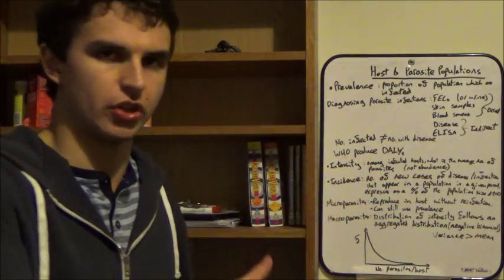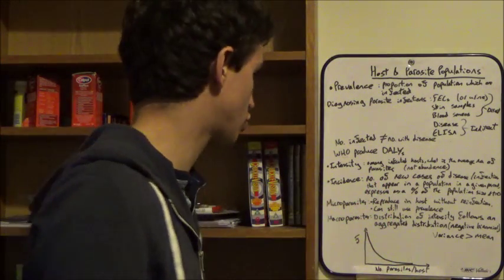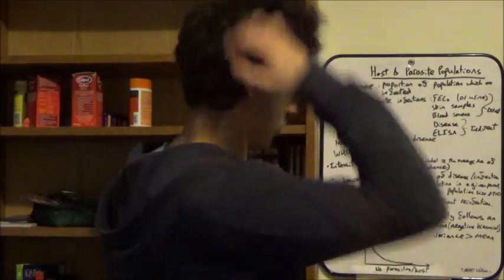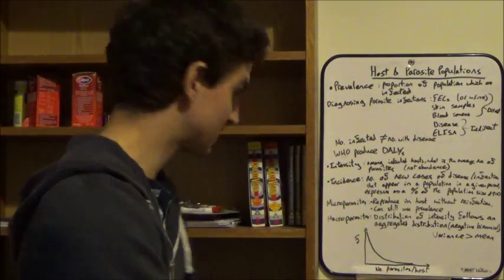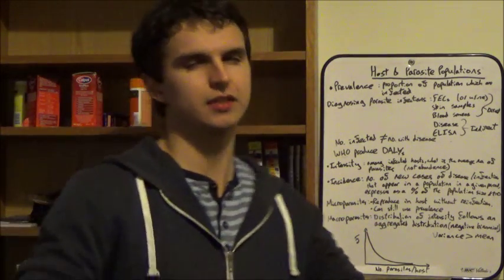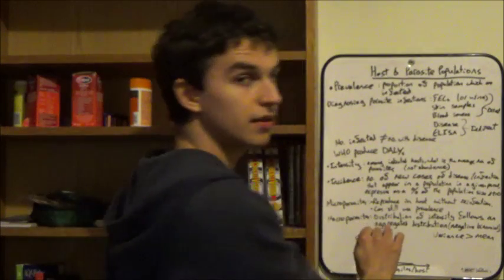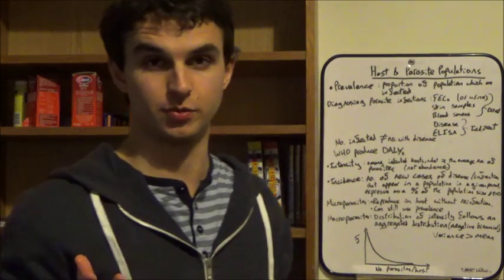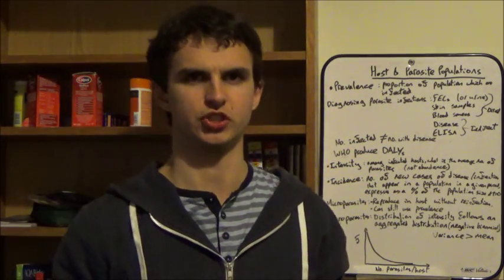When you look at the distribution of the intensity of parasites within a host, you'll see that it follows an aggregated distribution — in other words, a negative binomial distribution. On the x-axis we have the number of parasites per host, and on the y-axis the frequency. Most parasites are at lower intensities within a host. An aggregated distribution requires the variance to be greater than the mean — unlike the Poisson distribution where variance equals the mean, which is a random distribution.